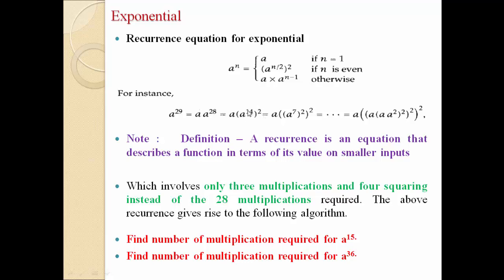Now for a raised to 14: n equal to 1? No. n is even? Yes — 14 is even. So a raised to 14 by 2, that is 7, whole raised to 2. So a raised to 7, whole square. Now for a raised to 7: n equal to 1? No. n is even? No — 7 is odd. So the otherwise condition applies: a into a raised to n minus 1, that is 7 minus 1 equals 6. So a into a raised to 6.